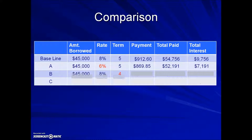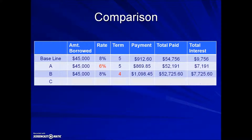If we keep everything the same but shorten the loan to four years, what impact does that have on the monthly payment and ultimately the cost? Is your estimate for monthly payment up or down? If you said up, you'd be correct. They're paying $1,098.45 per month, 12 months a year for four years. The total amount paid will actually be down from our base amount, and subtracting the amount borrowed shows a savings on total interest compared to the baseline.